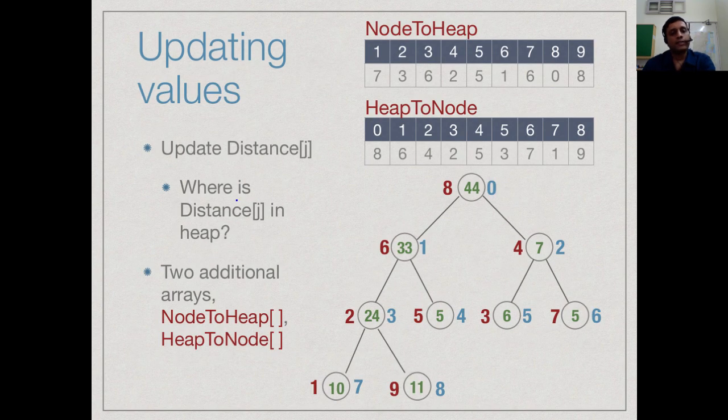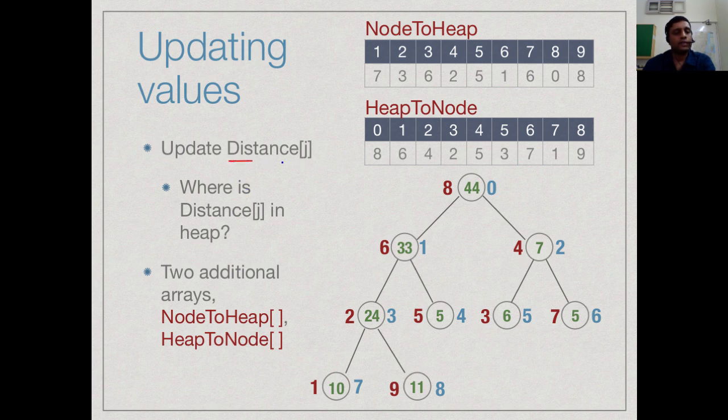If you look at Dijkstra's algorithm the way it works is we take a vertex j and say update its distance. We have to update the distance of some vertex j which is somewhere in the heap. What our previous example showed us is if we put our finger on the node in the heap and change its value we know how to adjust the heap. But how do we find where j is in the heap. Where is j located.